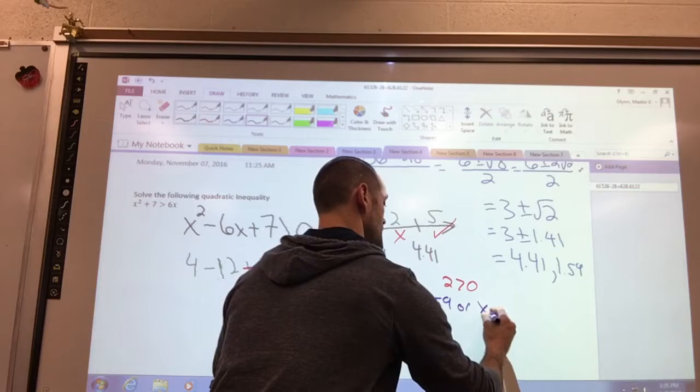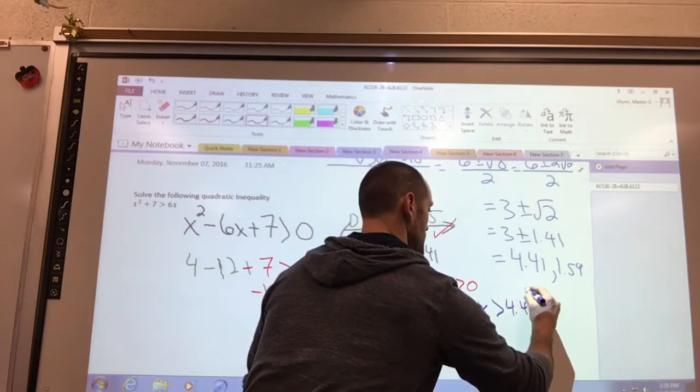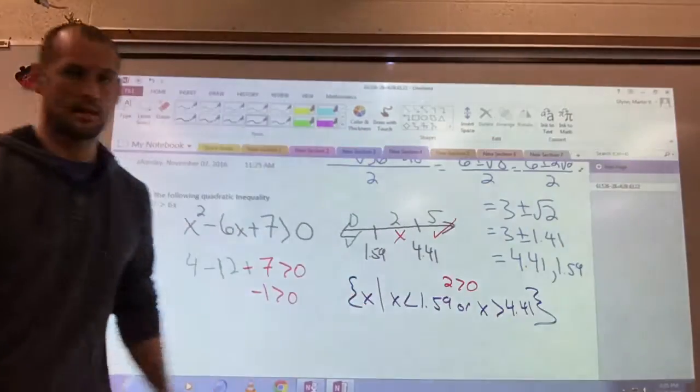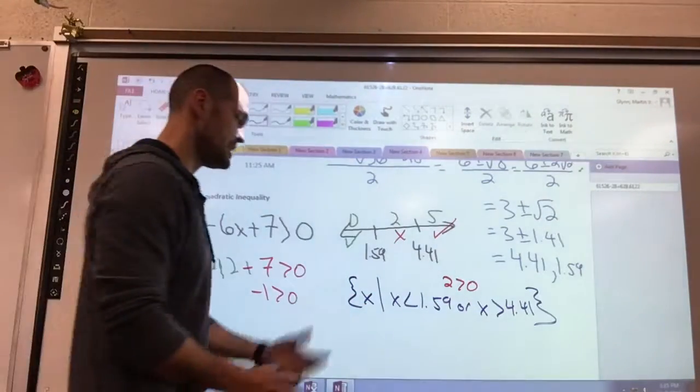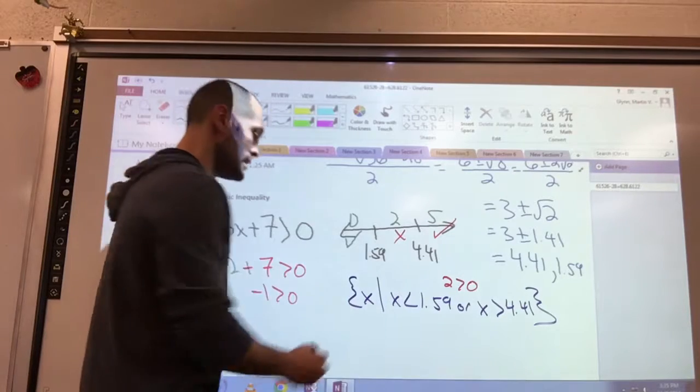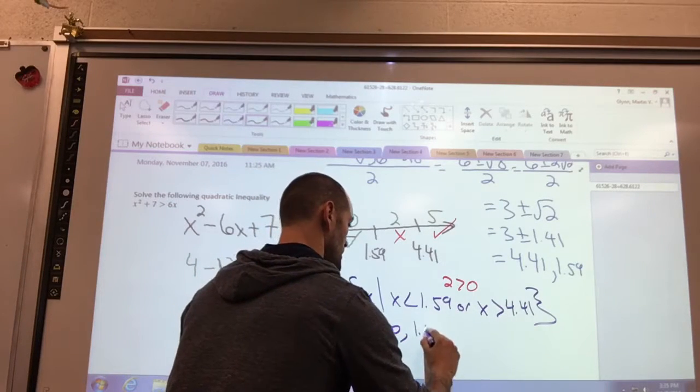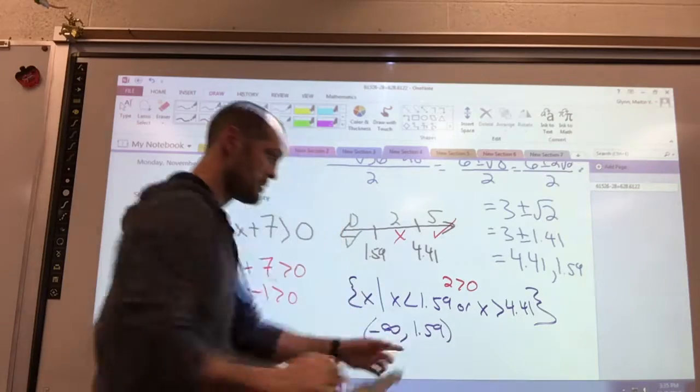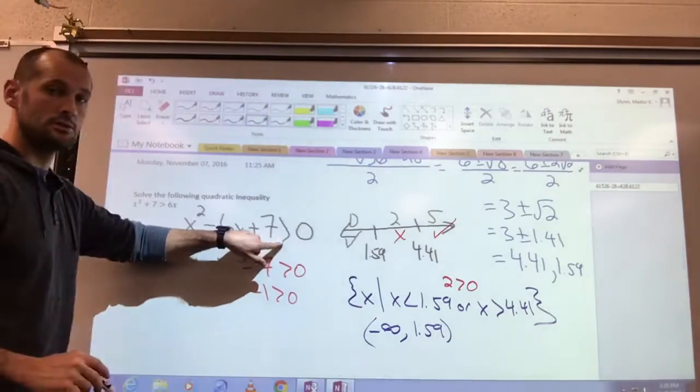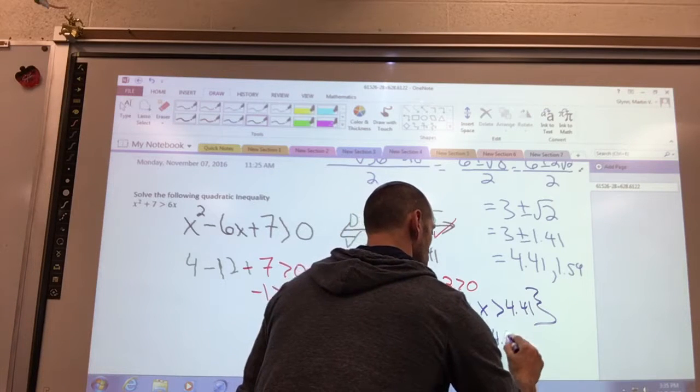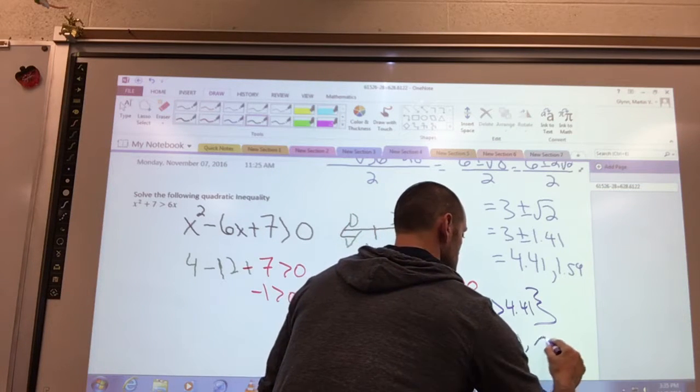So there is my solution set. If I want to use interval notation, it's even simpler. I do it negative infinity all the way up to 1.59, both with parentheses because it's not equal to, or 4.41 to infinity.